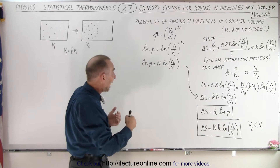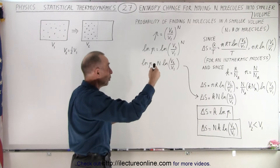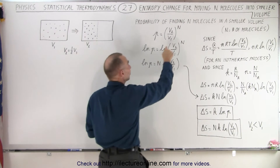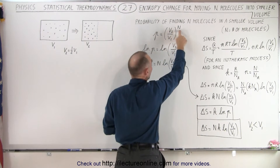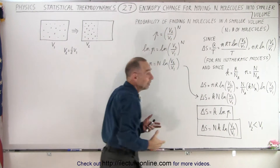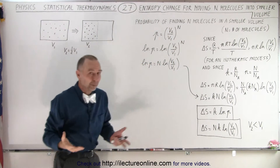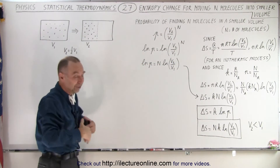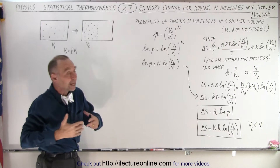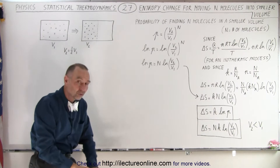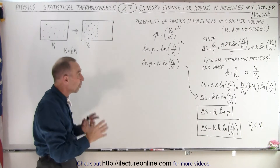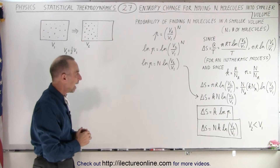As N grows, if V2 is half the size of V1, for example with six molecules, one-half to the sixth power gives a probability of one in 64. You can see that as N gets big, the probability continues to shrink — it becomes smaller and smaller for that event to happen.